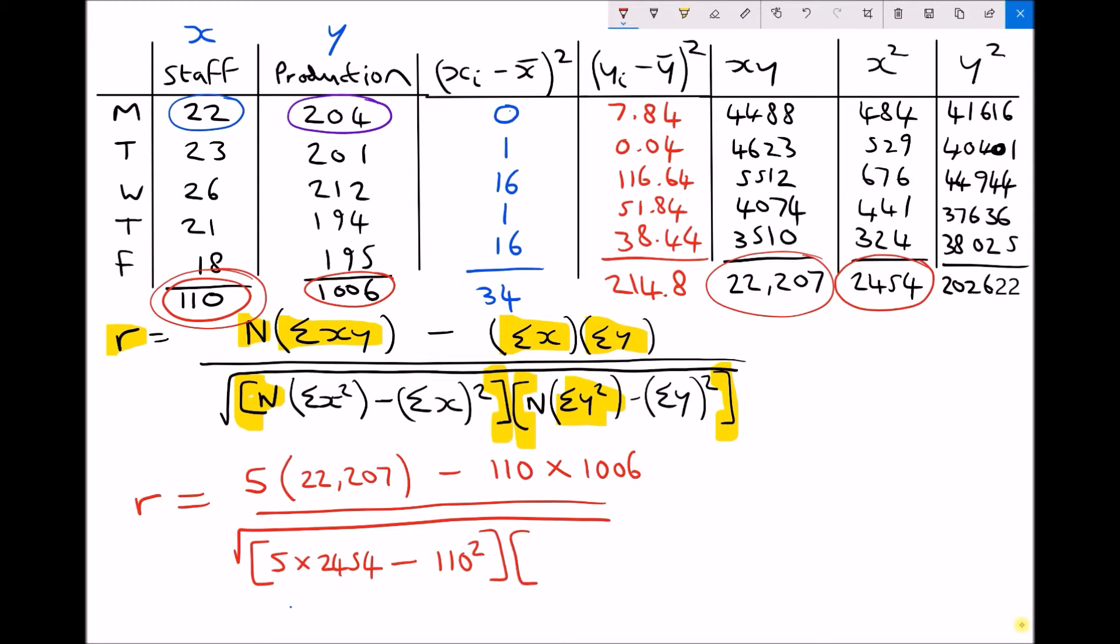And in our second set of brackets we have n again, times, this time the sum of y squared, which is our far right hand column, of 202622. Minus the sum of all of our y's. Again we've already used this, the 1006. All squared.